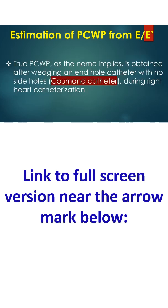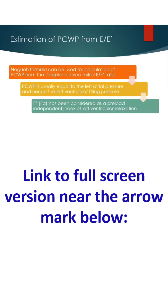True pulmonary capillary wedge pressure, as the name implies, is obtained after wedging an end-hole catheter with no side holes, typically a Cournand catheter, during right heart catheterization. Nagueh formula can be used for calculation of PCWP from the Doppler-derived mitral E by E' ratio.